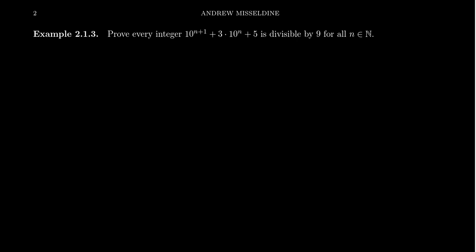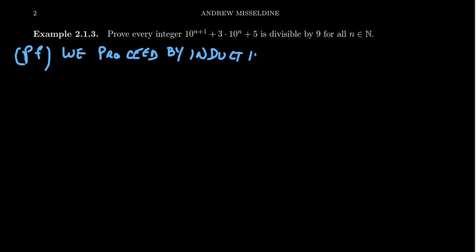So with this first example let's do a divisibility type argument — something you might do in number theory. Prove that every integer of the form 10^(n+1) + 3·10^n + 5 is always divisible by 9 for any natural number n. It's usually good when you start a proof by induction to state what you're going to do. When I write these proofs in real time, this isn't the most polished version — you may want to go to the lecture notes linked to this video for a cleaner proof.